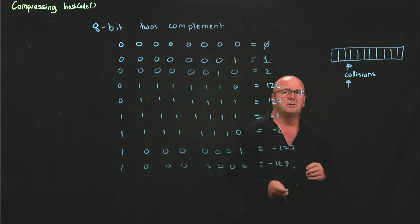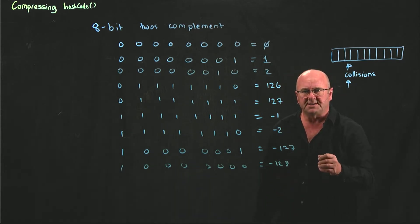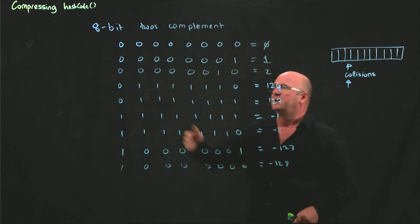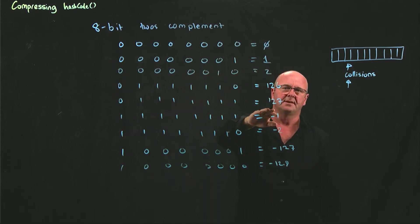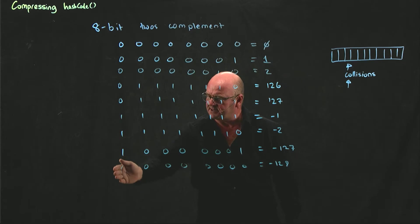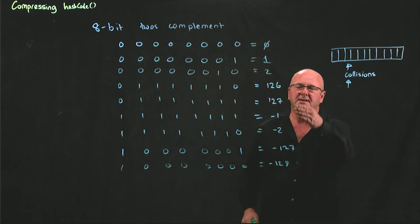And so, the way that Java represents integers, the first bit indicates the sign. If the first bit is 0, it's a positive integer. And if the first bit is 1, if the first bit is true, it's a negative integer.